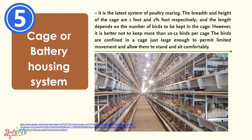Fifth, the cage or battery housing system. It is the latest system of layer housing. The breadth and height of the cage are 1 foot and 1.5 feet respectively, and the length depends on the number of birds to be kept in the cage. It is better not to keep more than 10 to 12 birds per cage. The birds are confined in a cage just large enough to permit limited movement and allow them to stand and sit comfortably.